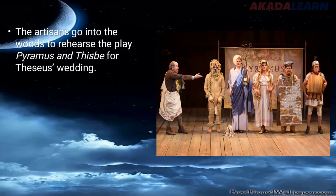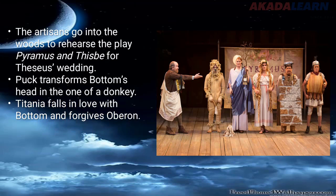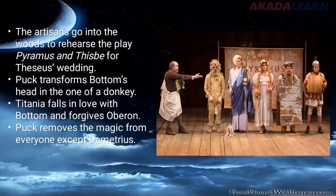The artisans also go into the woods to rehearse the play of Pyramus and Thisbe for Theseus's wedding. Theseus is already engaged to Hippolyta, queen of the Amazons, and these people wanted to present a lovely play for the wedding. Puck then transforms Bottom, changing his head into that of a donkey, and Titania falls in love with Bottom.